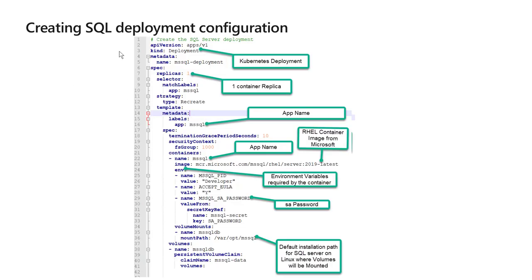Since now we have enough understanding about Kubernetes, let's start creating the deployment configuration in the YML file. This is how the SQL deployment configuration will look like. It is a standard file where you specify certain parameters. In this example, we are saying it is a Kubernetes deployment file - kind is deployment - and it also specifies the replica count, meaning how many copies of the application will be kept. You can specify the app name, the container image from where the application will be created. In this scenario, we are using the SQL Server 2019 container image for Red Hat Linux.